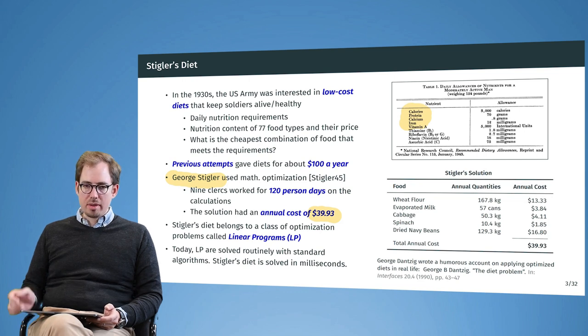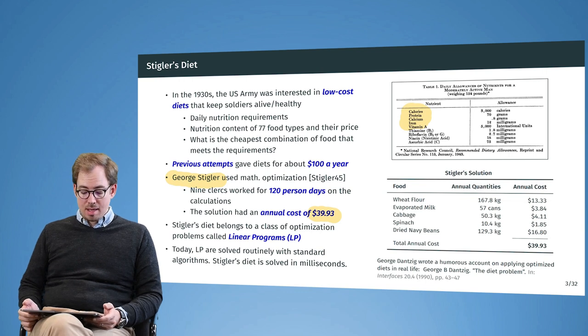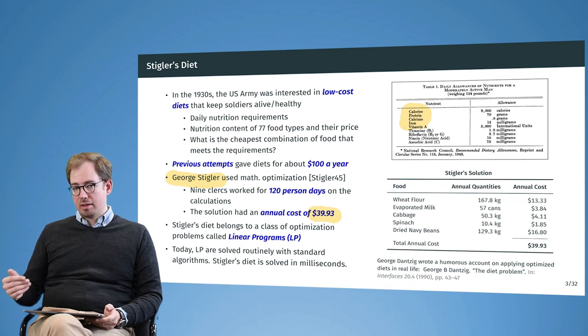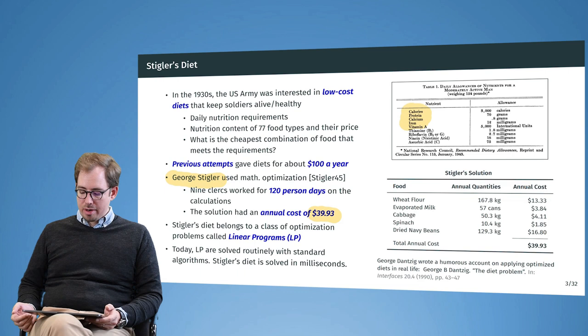They had more than a two-times improvement over the previous published result. You see here Stigler's solution: a lot of wheat flour and milk, cabbage, spinach, and dried navy beans. The solution is a little bit different if we allow meat, because then there will be liver involved—liver is very high in iron.